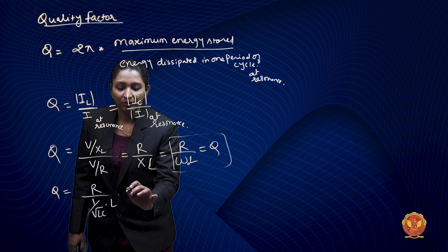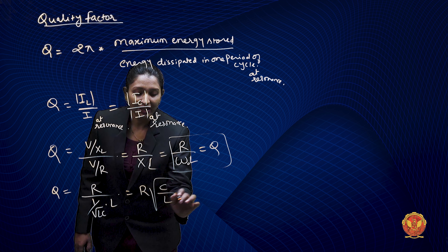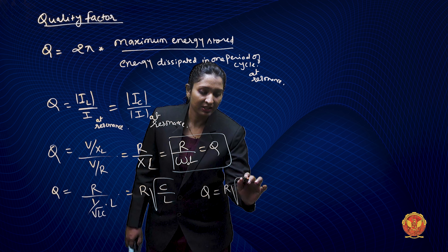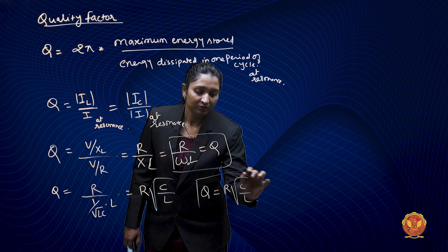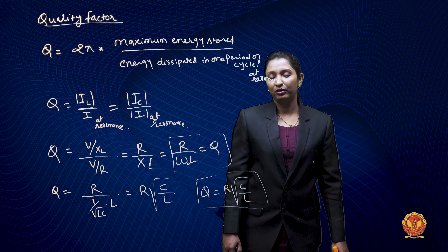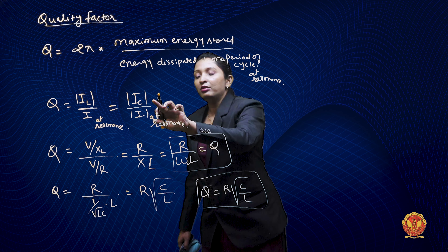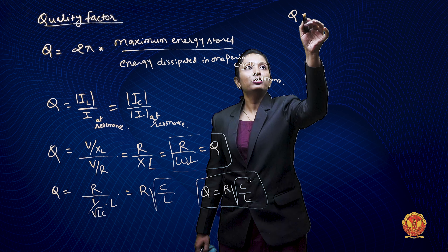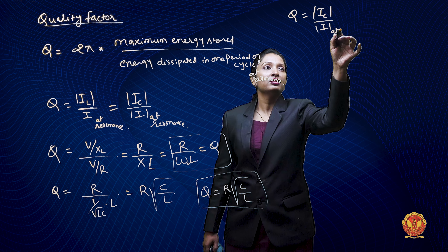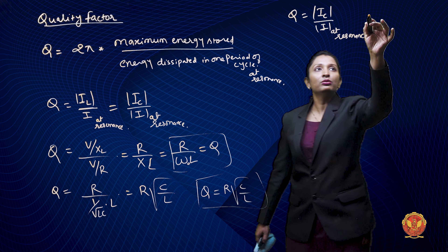How can I write this? I can write V by XL divided by V by R, which gives R by XL. So Q is equal to R by XL, which is equal to R by ωN, where ω is the resonance frequency. So we get this relation: Q is equal to R by ωL.